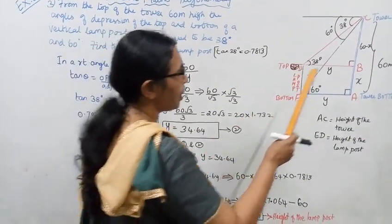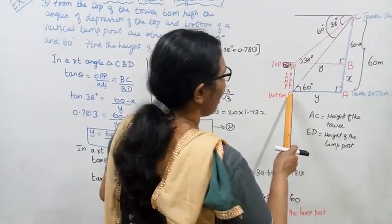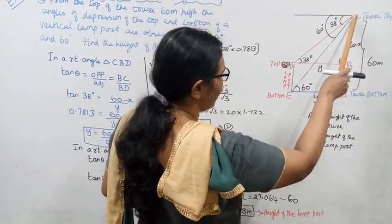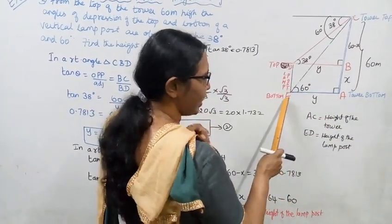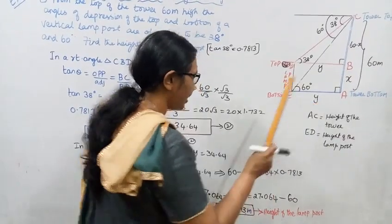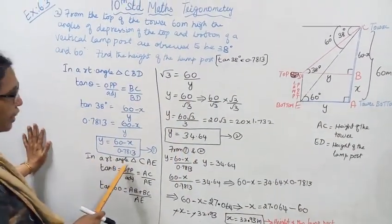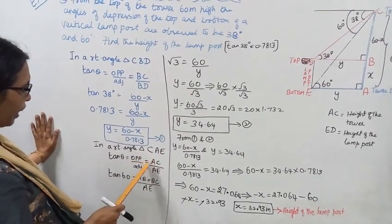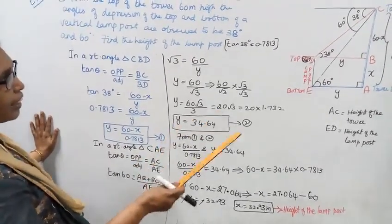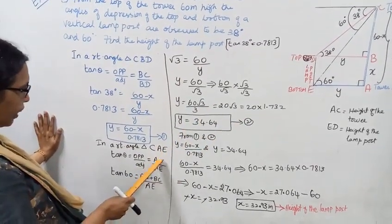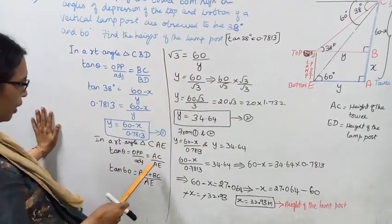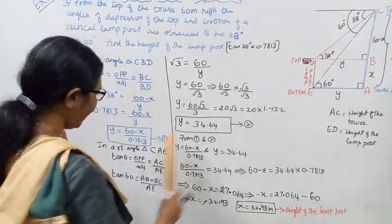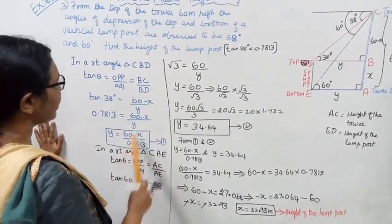In triangle CAE, the opposite side is AB plus BC, and the adjacent side is AE, which is Y. So tan theta equals opposite over adjacent: tan 60 degrees equals AB plus BC over AE. The angle of depression is 60 degrees, so tan 60 equals root 3. Therefore, root 3 equals the full height of the tower, AB plus BC, divided by AE.